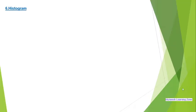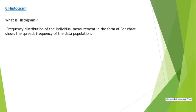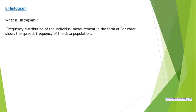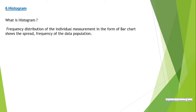Histogram is a simple bar chart. If you look at the data population, there are various variations in the process. By looking at the graph, we can easily understand the data. There are many minimum and maximum values. Frequency is the individual measurement of the data population — we can measure this in a Histogram.